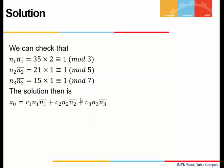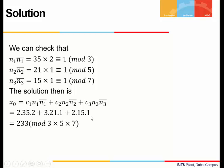So now, what is the solution? Whatever we needed, we have found. What we do is multiply c₁n₁n₁ bar plus c₂n₂n₂ bar plus c₃n₃n₃ bar. And this is what we get: 2 × 35 × 2 + 3 × 21 × 1 + 2 × 15 × 1.